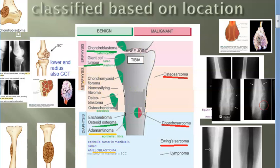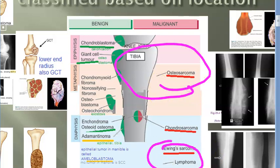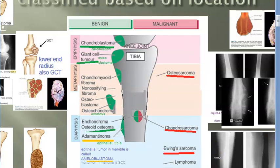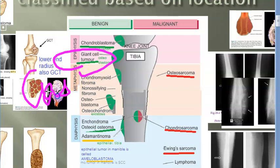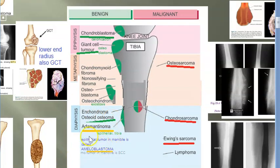In the first part you're seeing benign tumors, and in the second part malignant tumors. For malignant, you mainly need to remember osteosarcoma and Ewing's sarcoma — these two are very important. On the benign side, you should know giant cell tumor, also called osteoclastoma, and osteoid osteoma, which they have asked in the orthopedics exam.